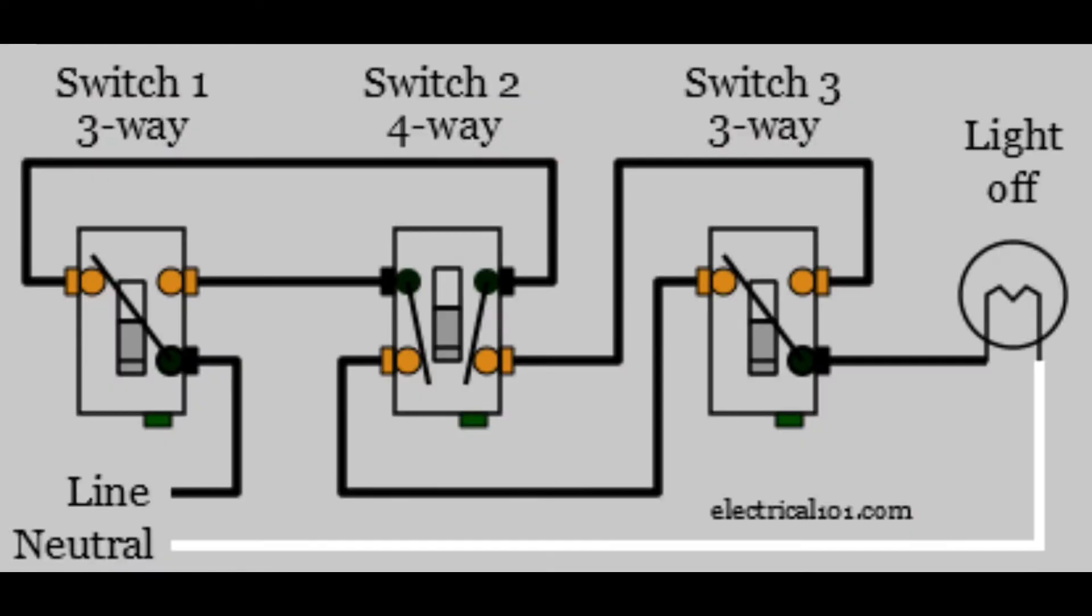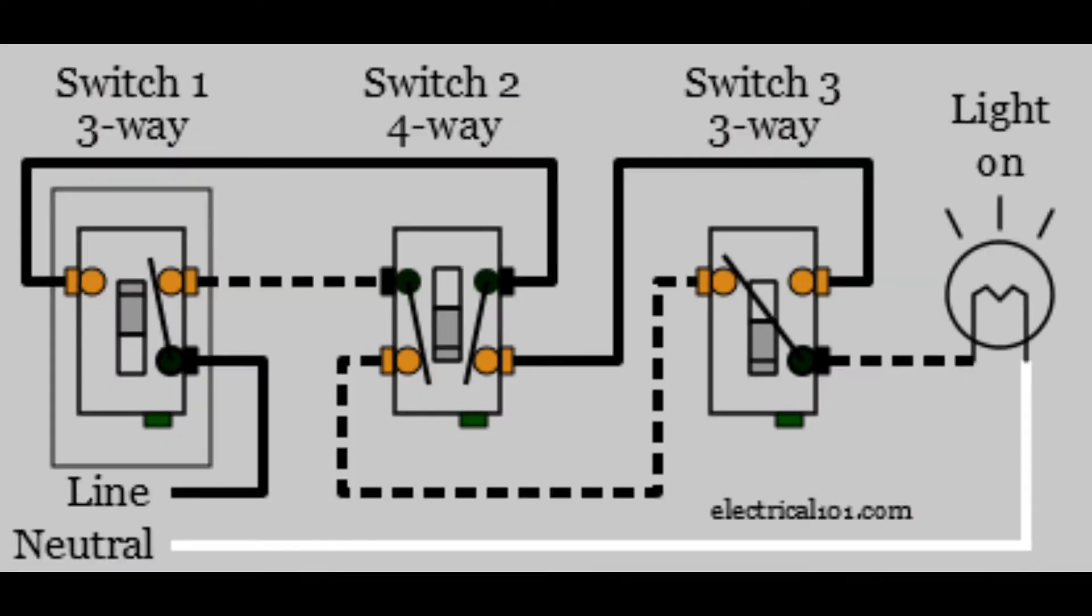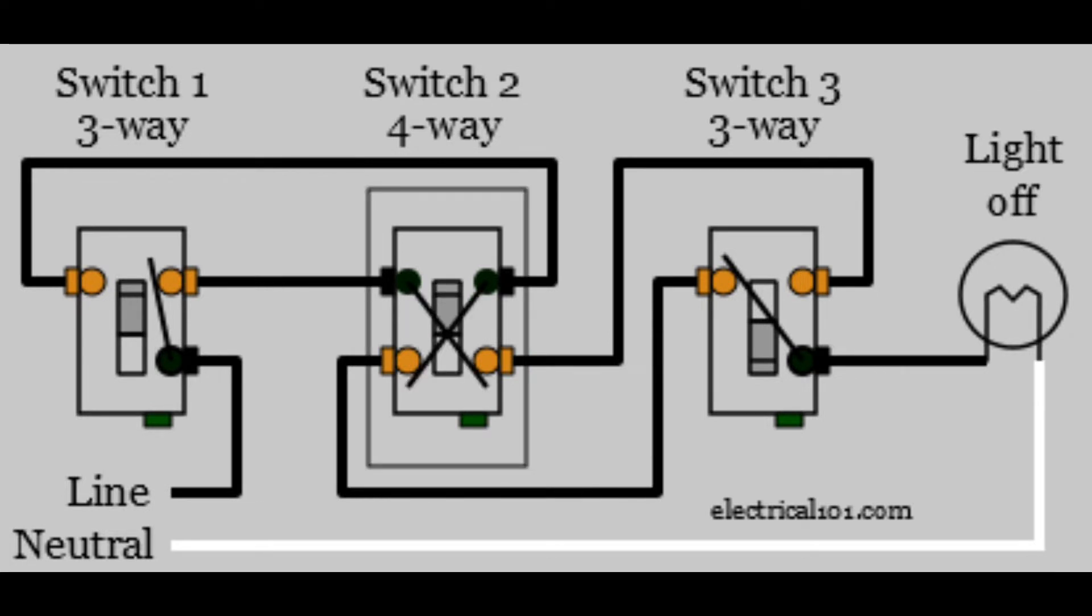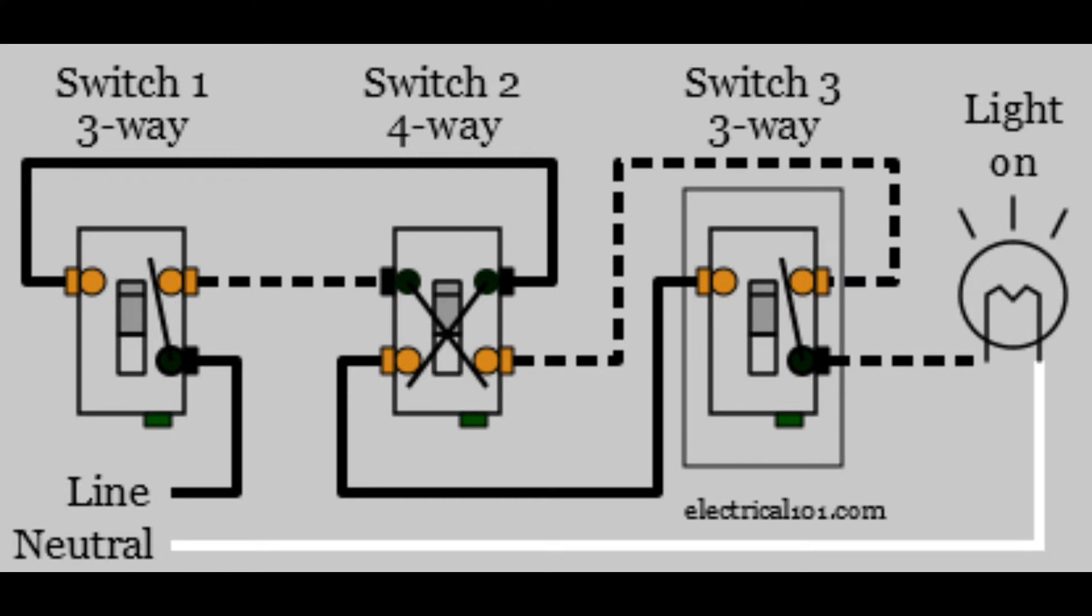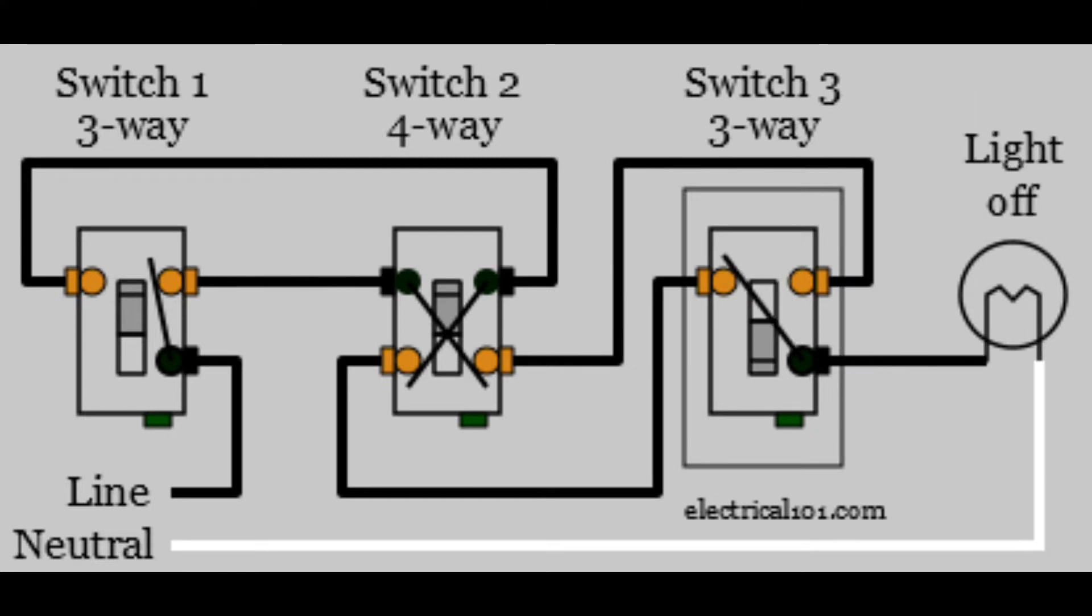Four-way switches. Four-way switch configurations are used to control lights with three or more switches. A three-way switch is used on each end with one or more four-way switches in between two three-way switches.